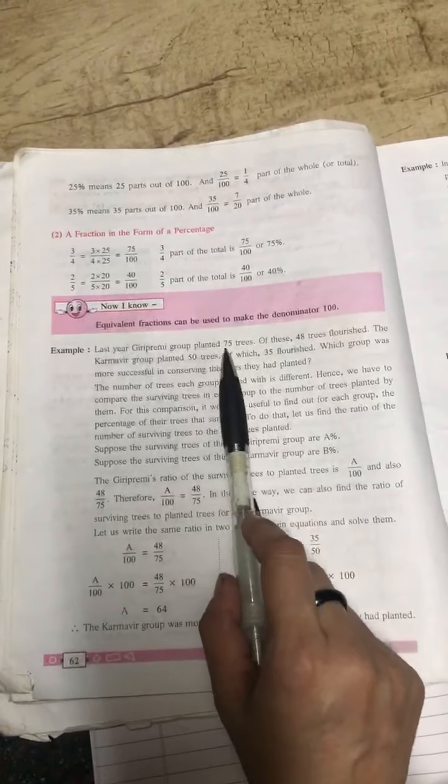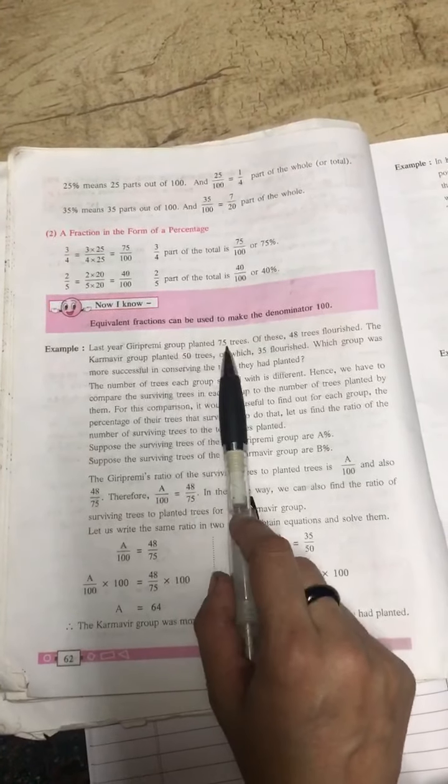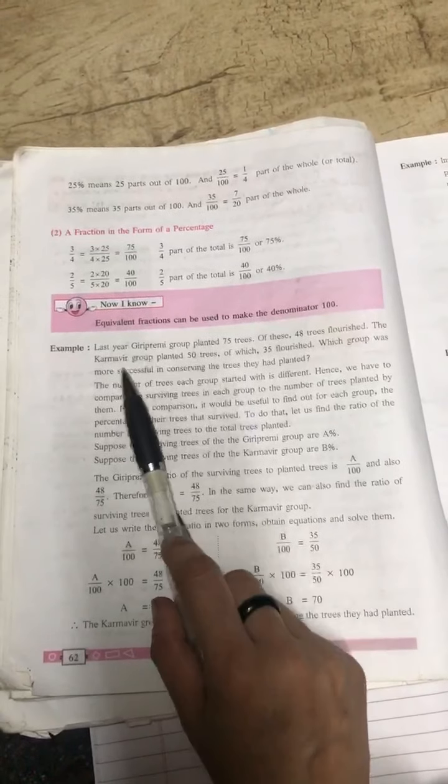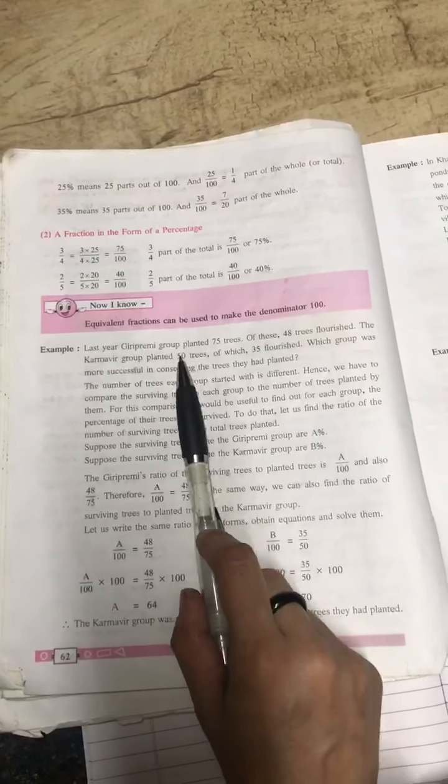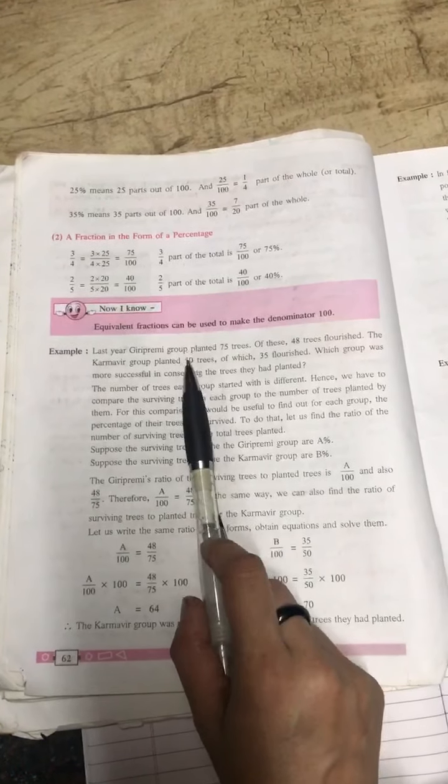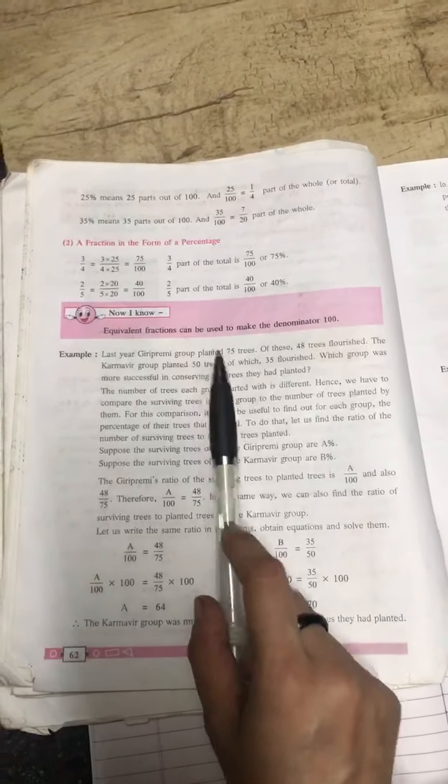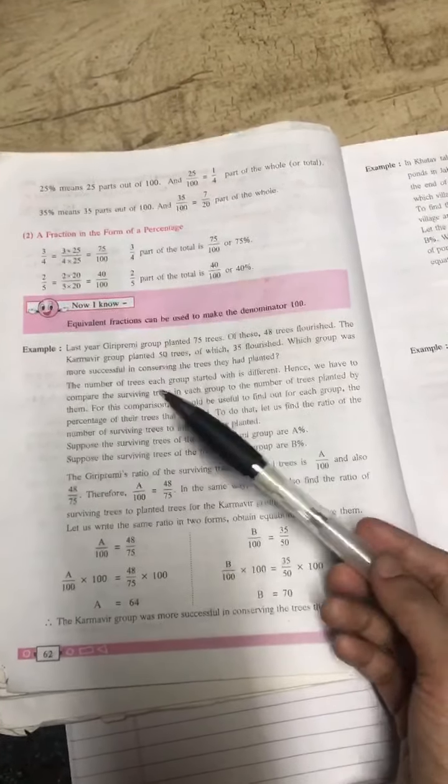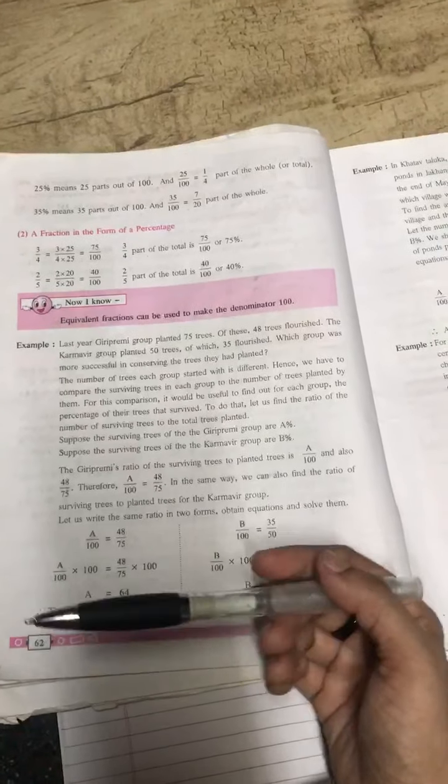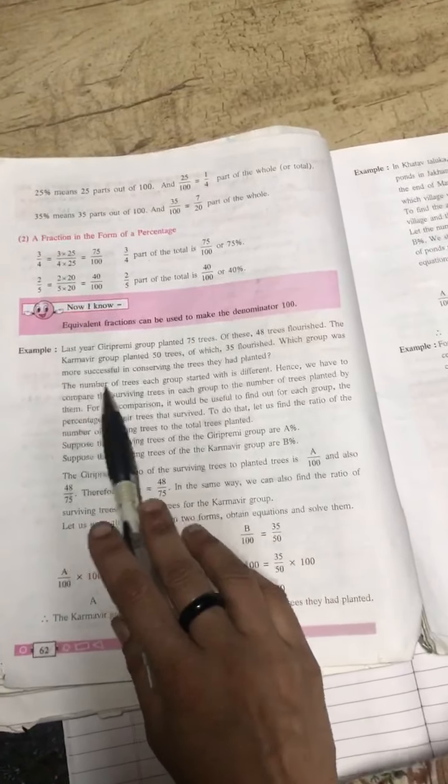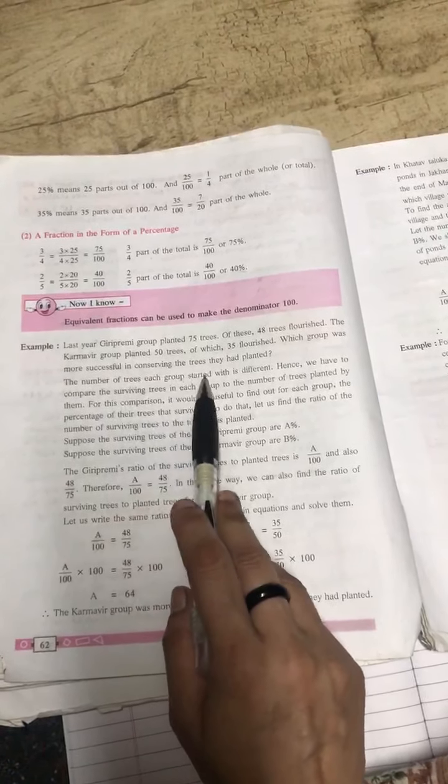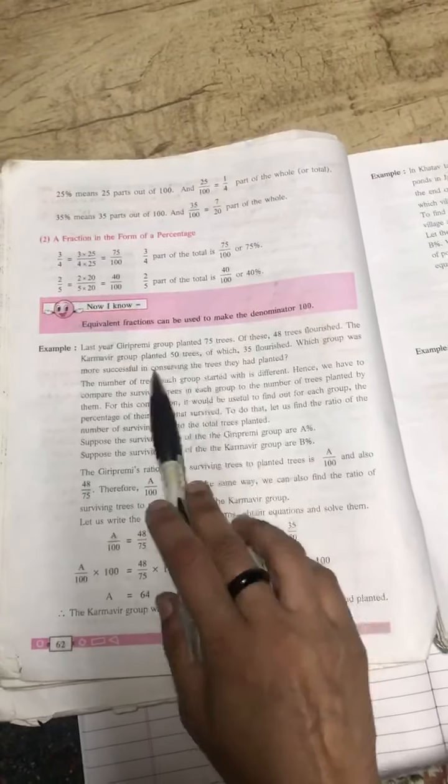In different groups they have planted the trees. Karamvir, Giri Preemi has planted 75 and Karamvir has planted 50. Now to find out which group was more successful in saving the trees, we need to first find out the percentage.